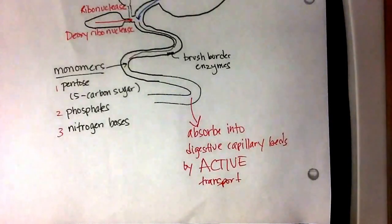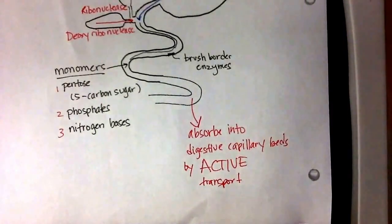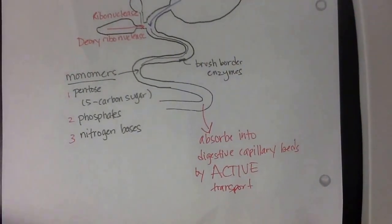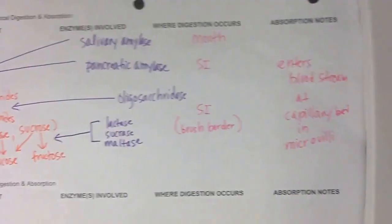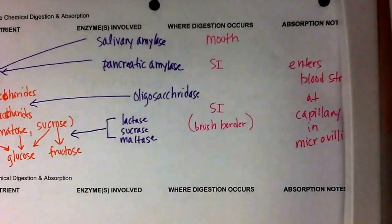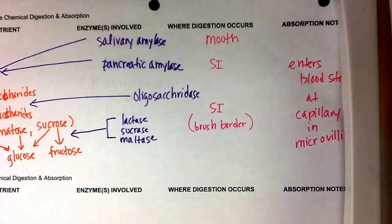Alright, so we've gone through these four different chemical digestive processes. The last thing that I want you to do is I want you to print out the chemical digestion worksheet that's on Blackboard. It will look like this. And you're going to work through this information.